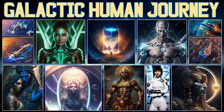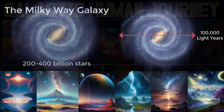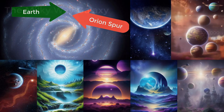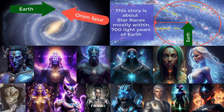A galactic human journey. This is the Milky Way galaxy with an estimated 200 to 400 billion stars. It's 100,000 light-years across. Here's the position of Earth within the Orion Spur. This red circle shows stars within 10,000 light-years of Earth, and this story is about star races mostly within 700 light-years of Earth.